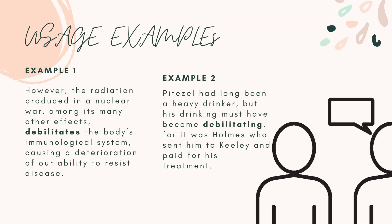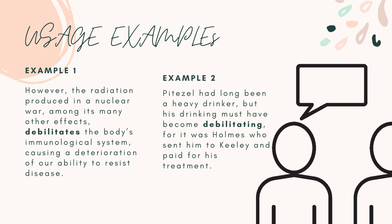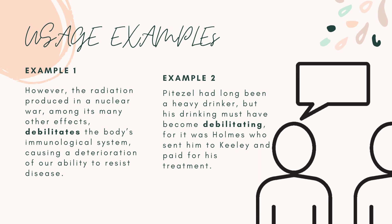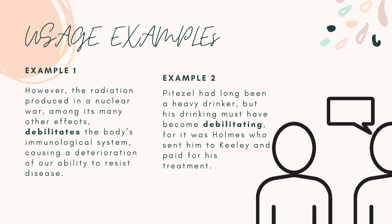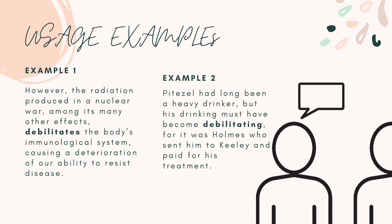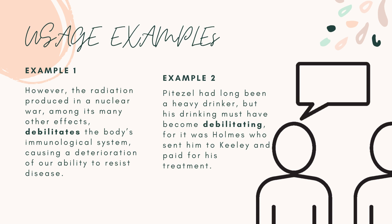Usage examples. Example 1: However, the radiation produced in a nuclear war, among its many other effects, debilitates the body's immunological system, causing a deterioration of our ability to resist disease. Example 2: Pitezel had long been a heavy drinker, but his drinking must have become debilitating, for it was Holmes who sent him to Keeley and paid for his treatment.